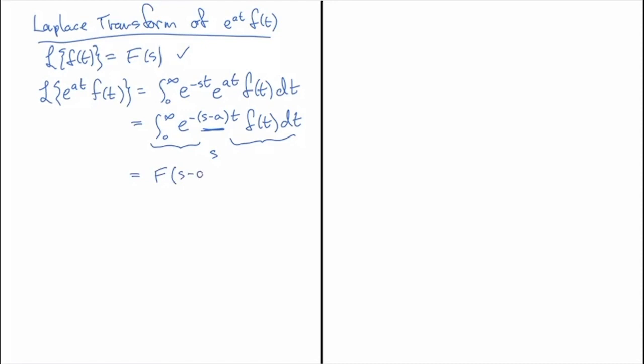So how do we use that? Well we're going to find in a lot of cases we're going to be seeing a result of our calculations from solving an ODE have some kind of a shift of a transform that we know, and what that means is that we just have to go backwards and multiply the inverse of the one that we know by e to the a t.